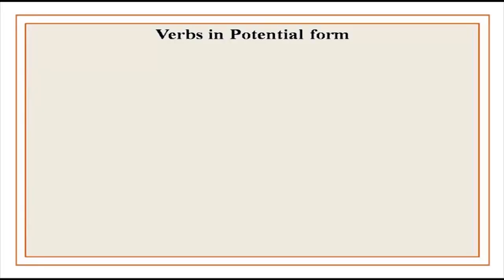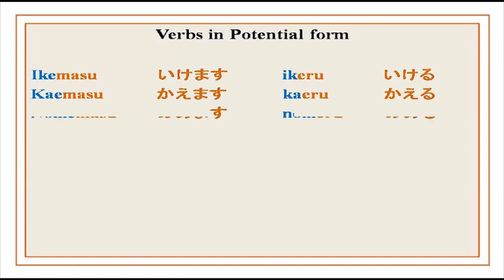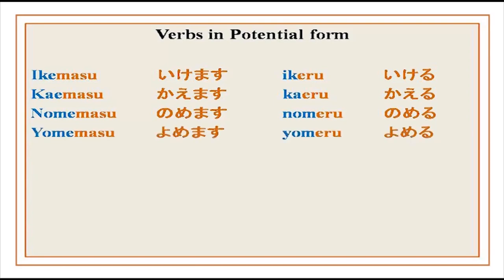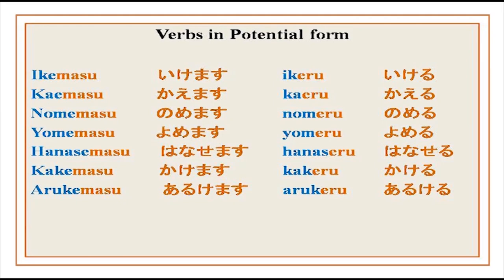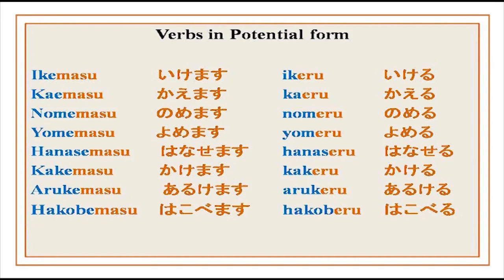Repeat after me — the plain form is given here: ikemasu — I can go; kaemasu — I can buy; nomemasu — I can drink; yomemasu — I can read; hanasemasu — I can speak; kakemasu — I can write; arukemasu — I can walk; hakobemasu — I can shift or move something. And dekimasu is group 3, from suru meaning to do. Dekimasu means I have the ability to perform a certain activity — it is an exception, instead of suru we have dekiru for group 3.